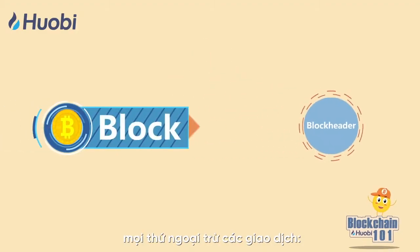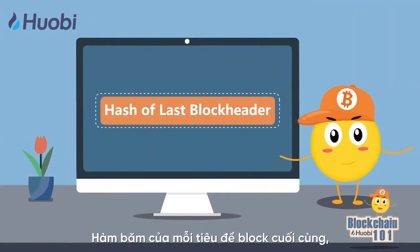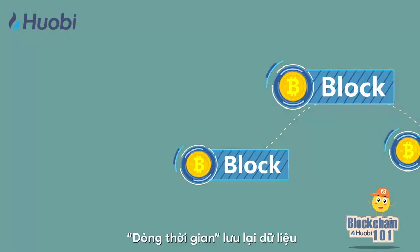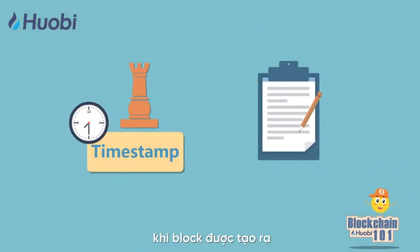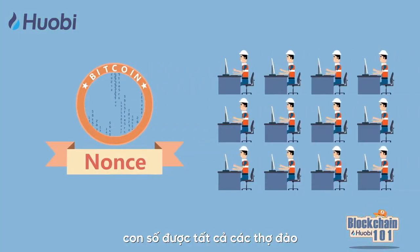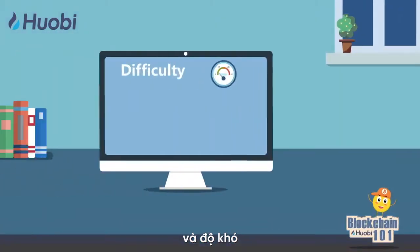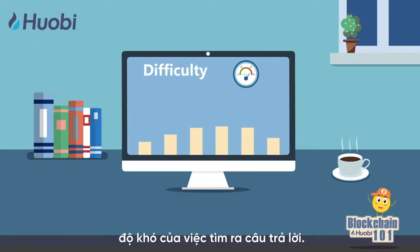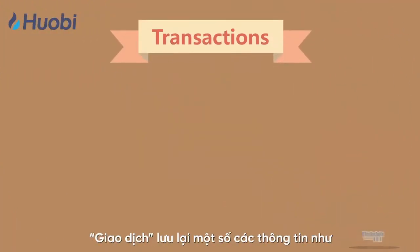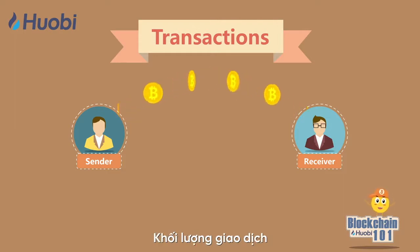The block header contains everything besides transactions. It includes the hash of the last block header, ensuring the blocks' chronological order. The timestamp records the time when the block is generated. The nonce is the number that all miners seek to find every 10 minutes, and difficulty determines how hard it is to guess the answer.